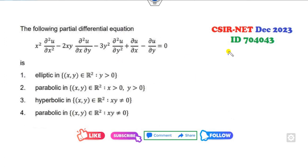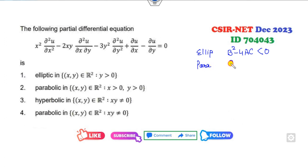What is the condition for the elliptic PDE? We all know B² minus 4AC must be less than 0, then we call it elliptic. When it is said to be parabolic, this value should be 0. And when this value is greater than 0, we call it hyperbolic.